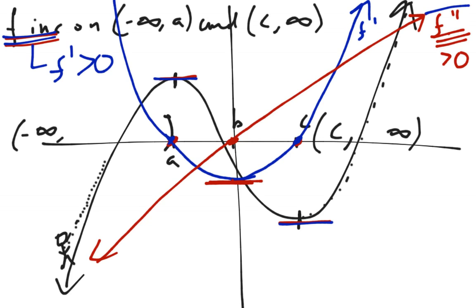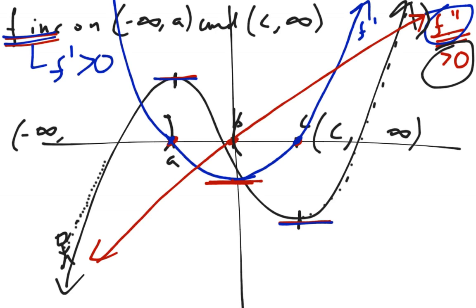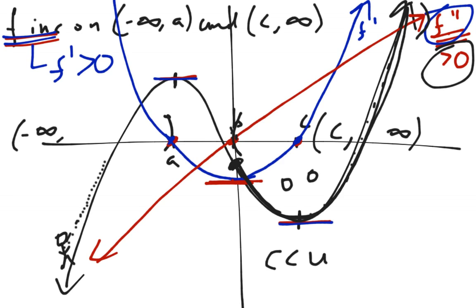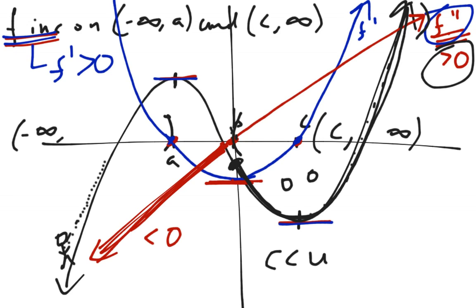Furthermore, we can also notice the relationship between f double prime and the original function. From b onwards to infinity, f double prime is greater than zero, and we said that if f double prime is greater than zero, that means f is concave up. Looking at the graph of f, from b onwards to the right, notice that it has that upward happy-face shape, which means f is concave up on that interval. On the other side, when f double prime is negative, f is concave down — a droopy sad face — and indeed f curves downward on that part of the interval.